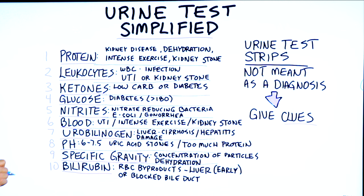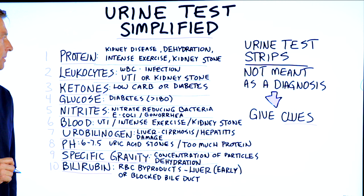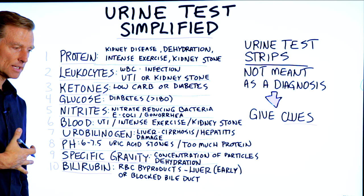Then we have leukocytes, which are white blood cells. That would be a sign of an infection. It could be a UTI, it could be a kidney stone, or it could be some type of infection anywhere in the kidney, the bladder, or the ureters.